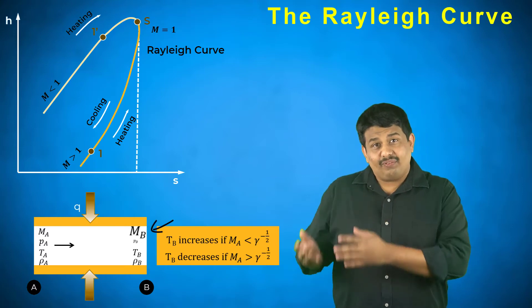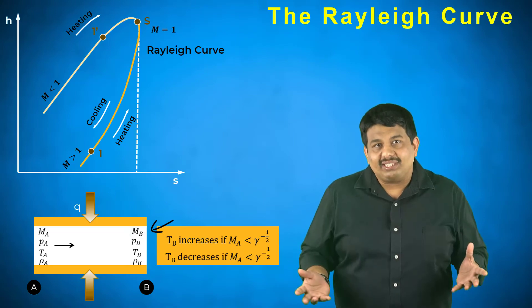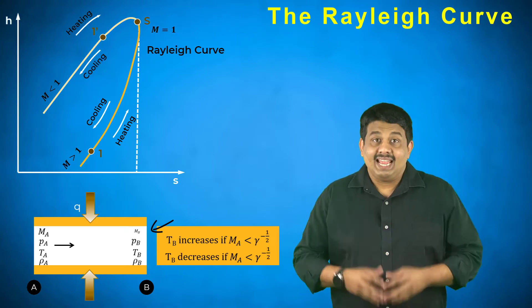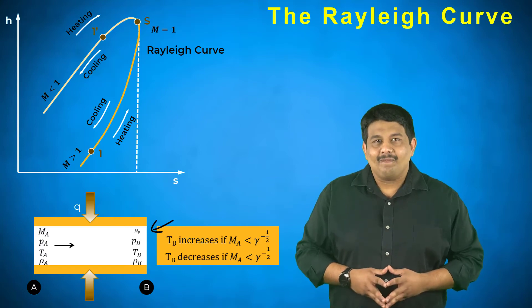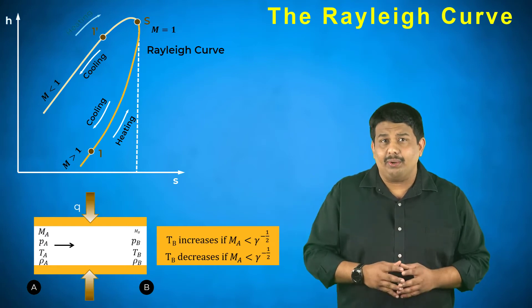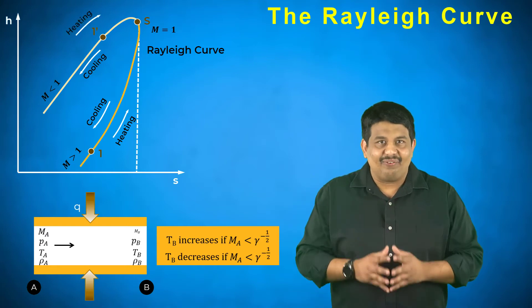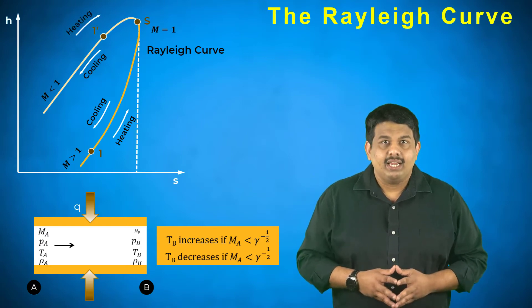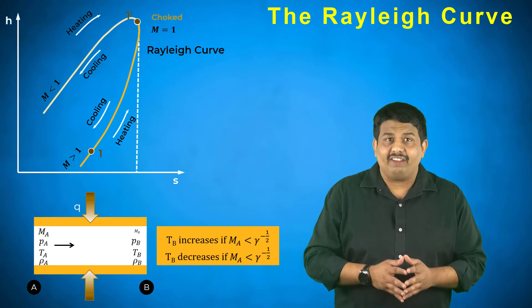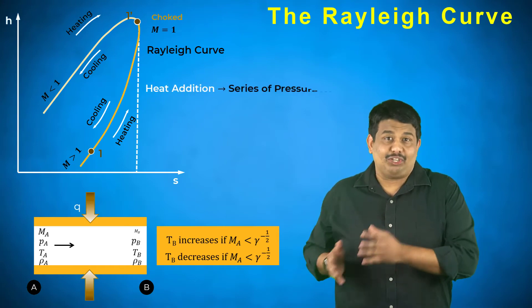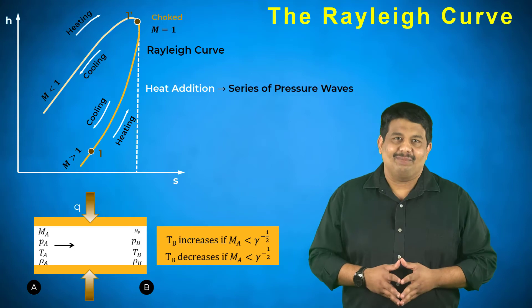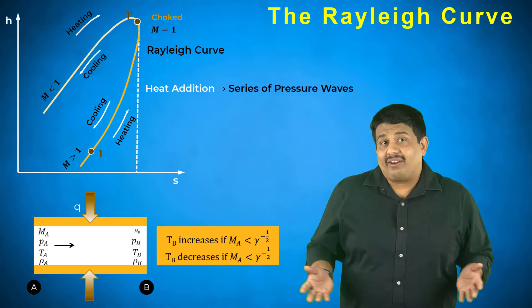Removal of heat from the flow produces a reverse effect and the subsonic flow decelerates. Similar to the supersonic flow, if heat added to the subsonic flow is beyond the critical value required to accelerate the flow to sonic conditions, the flow is again choked and a series of pressure waves propagate upstream to adjust the upstream conditions in region A to a lower subsonic Mach number.